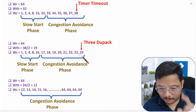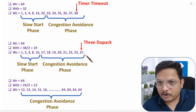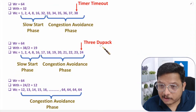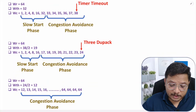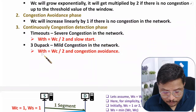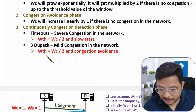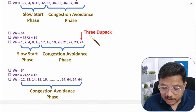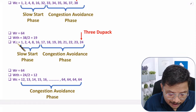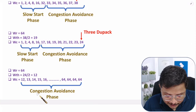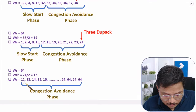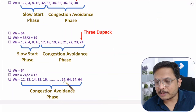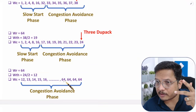For the second scenario — three duplicate acknowledgements — we divide the congestion window by 2 for the new threshold value, then perform congestion avoidance. For example, after congestion window reaches 24 and three duplicate acknowledgements arrive, divide 24 by 2 to get threshold equals 12. Then congestion avoidance begins, incrementing the congestion window by 1: 13, 14, 15, and so on, up to a maximum of 64 — the receiver window size.